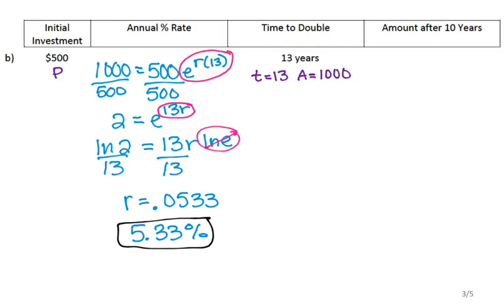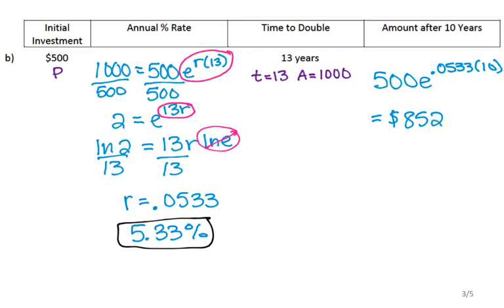Now that I actually know R, I can find the amount after 10 years. My initial amount was 500, R is 0.0533, and the time is 10 years. I plug that into my calculator and get approximately $852.02.